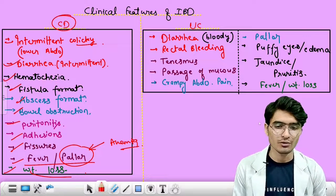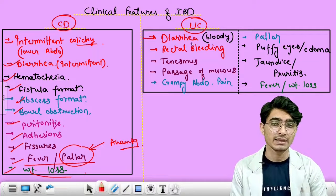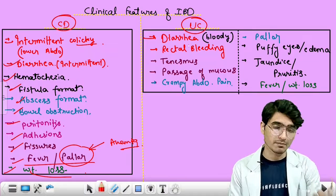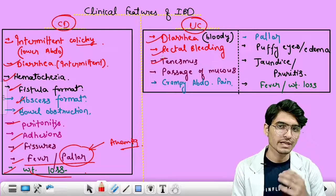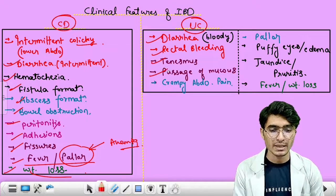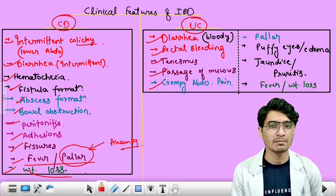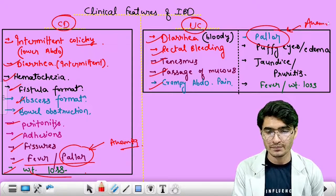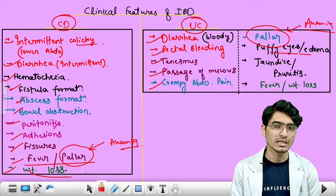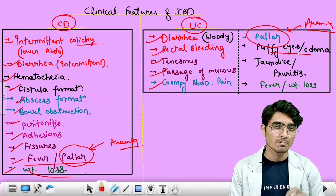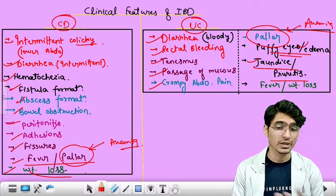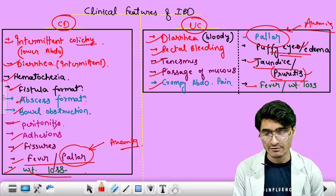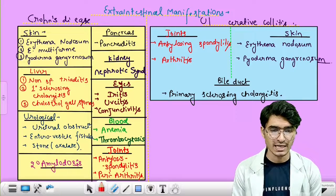Clinical features of ulcerative colitis: first, bloody diarrhea and bloody dysentery with frequency greater than six per day. Second, rectal bleeding. Third, tenesmus — sensation of incomplete evacuation. Fourth, passage of mucus. Fifth, crampy abdominal pain. Sixth, pallor due to anemia. Seventh, decreased serum albumin from massive blood loss reduces blood colloidal osmotic pressure, resulting in edema and puffy eyes. Eighth, primary sclerosing cholangitis causes bile duct obstruction leading to obstructive jaundice and pruritus due to bile salts. Non-specific symptoms include fever and weight loss.